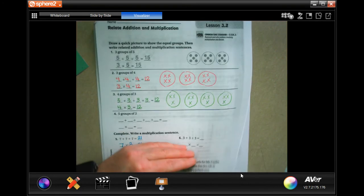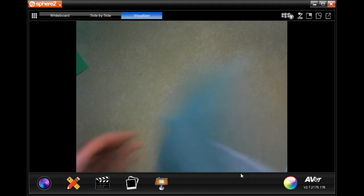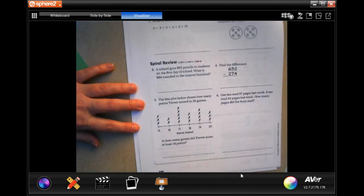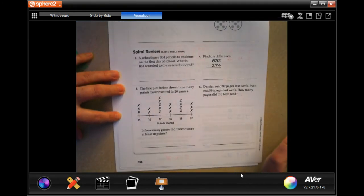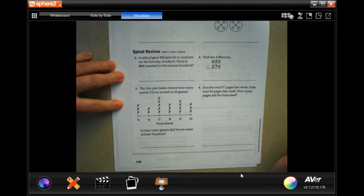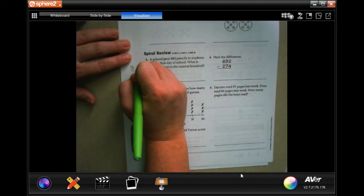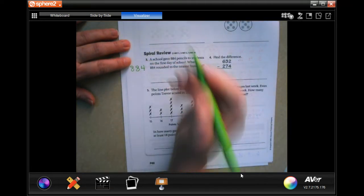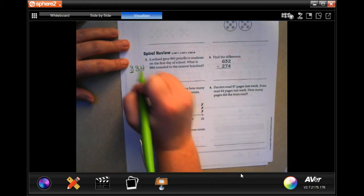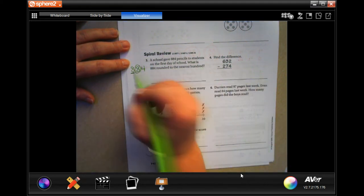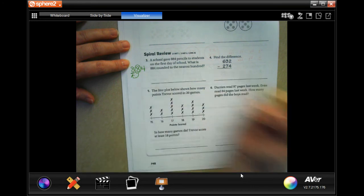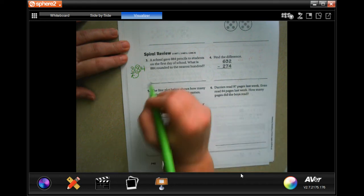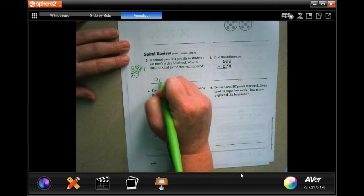We're going to go into the back where you guys are going to go ahead and do the lesson check, just like always. And we're going to go down and do this spiral review. So it says a school gave 884 pencils to students on the first day of school. What is 884 rounded to the nearest hundred? We need to round it to the nearest hundred. That means we need to look at the next number. If it's five or bigger, then it bumps it up to a nine. If it's smaller than five, then it stays an eight. Eight is bigger than five, so it's going to be nine hundred.